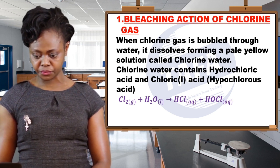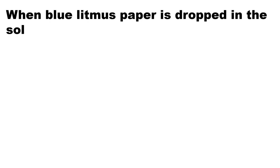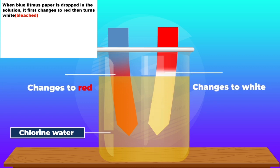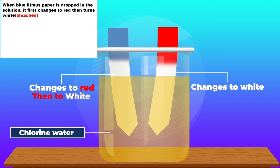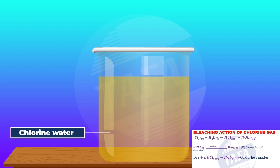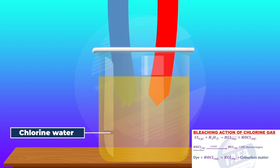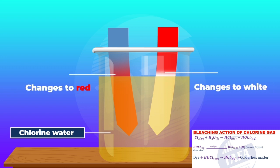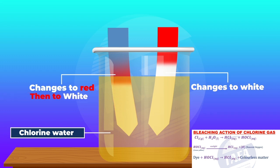This combination of hydrochloric acid and chloric one acid is what we refer to as chlorine water. When blue litmus paper is dropped in chlorine water, it first turns red since the solution is acidic. Then it turns white, because the litmus paper is bleached due to the presence of chloric one acid. The equation illustrates how chloric one acid bleaches dyes like the dye in the litmus paper. From that equation, we note that chlorine bleaches by oxidation.